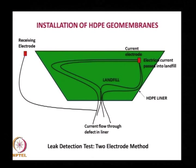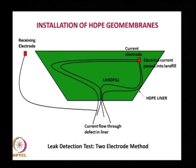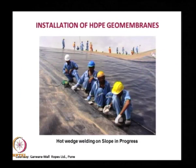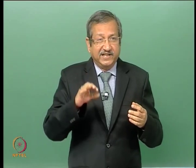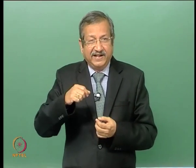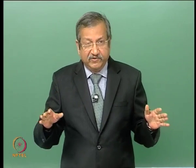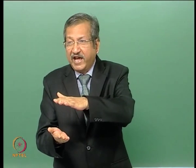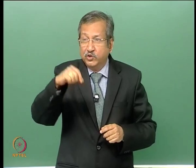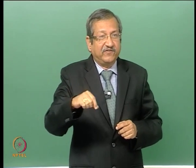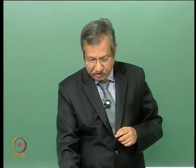After installation, a leak detection methodology is applied. During construction, a hole may have been inadvertently created. A grid-based electrical conductivity method is used: the whole area is filled with water, and using an anode-cathode potential difference system, any hole is identified and then rectified by extrusion welding.